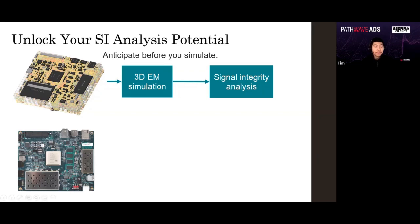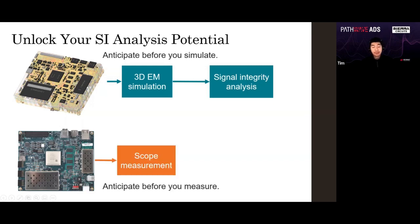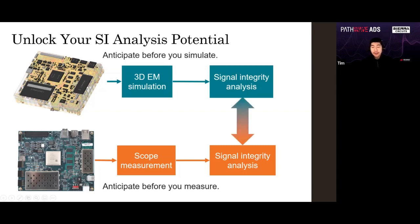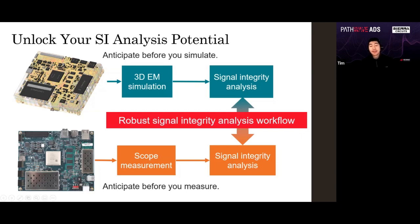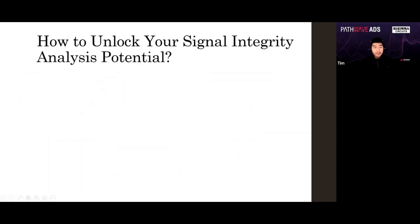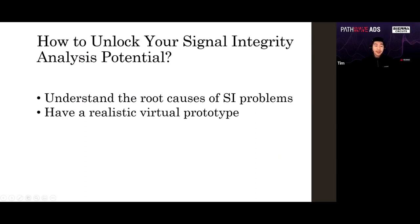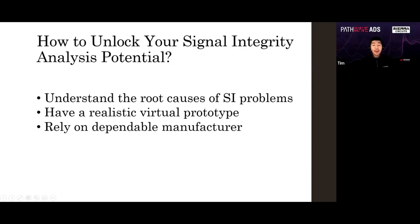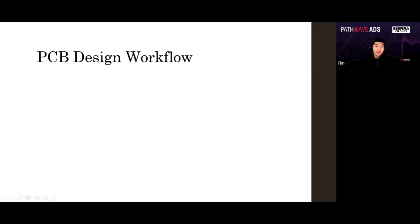It only gets real when it's fabricated. We'll also need to take measurements on the fabricated board — a scope measurement — and then you have another signal integrity analysis block. If we combine the two together, in the middle is the robust signal integrity analysis workflow. To unlock that, there are three big things: first, understand the root causes of SI problems; second, have a realistic virtual prototype; and third, rely on a dependable manufacturer — that is Sierra Circuits.